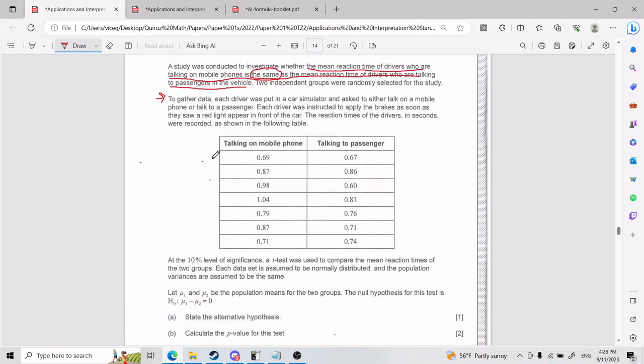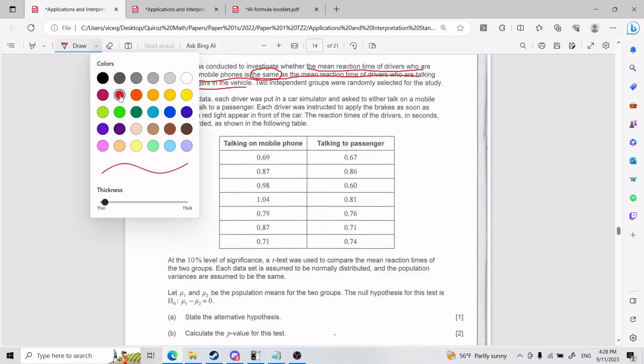To gather data, each driver was put in a car simulator and asked to either talk on a mobile phone or talk to a passenger. Each driver was instructed to apply the brakes as soon as they saw a red light appear in front of the car. The reaction times of the drivers in seconds were recorded as shown in the following table. So for example, guy number one, when talking on a mobile phone, had to press brake in 0.69 seconds. That's the context, that's what's going on.